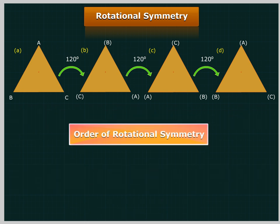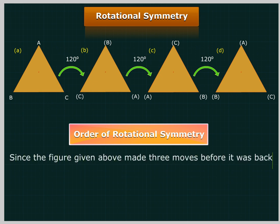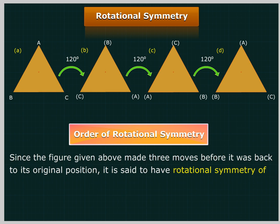Order of rotational symmetry. Since the figure made three moves before it was back to its original position, it is said to have rotational symmetry of order 3.